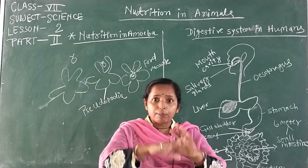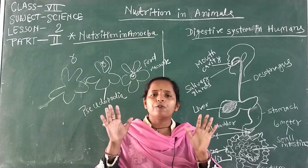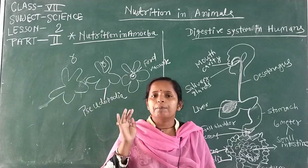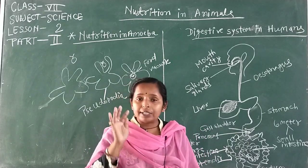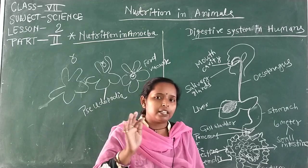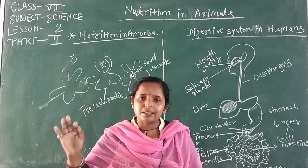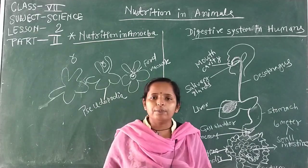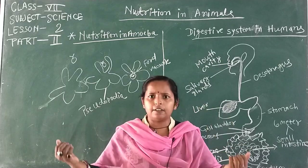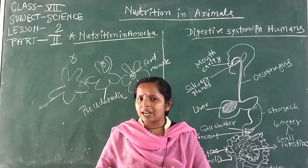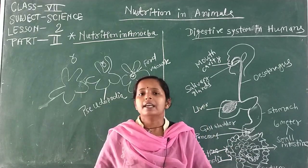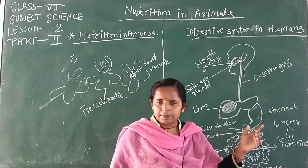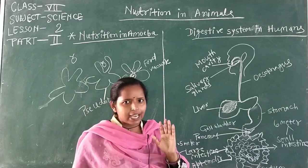There are four types of teeth in our mouth: incisors, canines, premolars, and molars. Incisors help to cut or bite food materials; canines help in tearing flesh; premolars and molars chew and grind food materials very well.